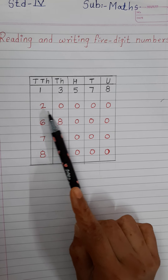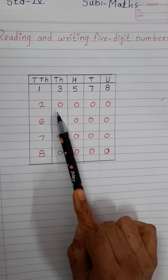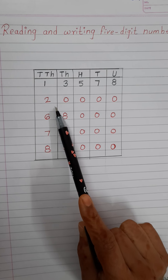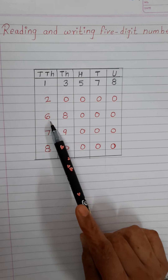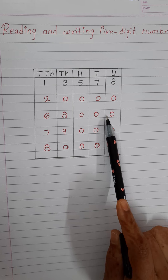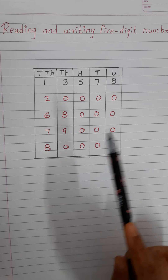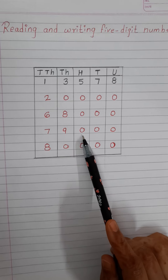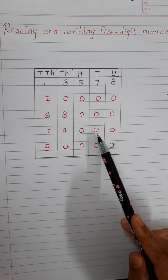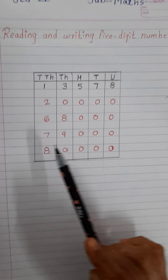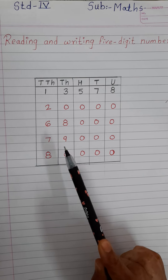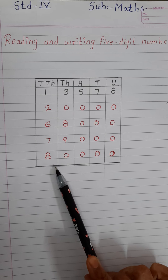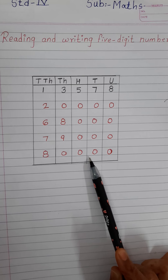The next number also has 5 digits — we read it as 20,000. Next is 68,000. Now next is 79,000. On the hundreds place there is 0, on the tens place also 0, and on the unit place also 0, that's why we read it as 79,000. And this one is 80,000.